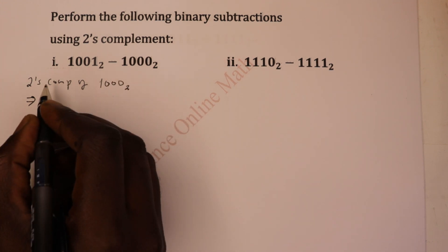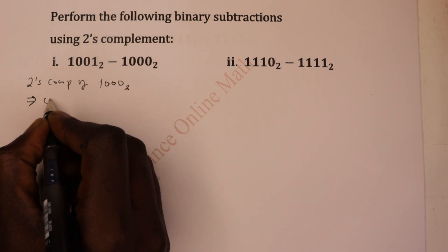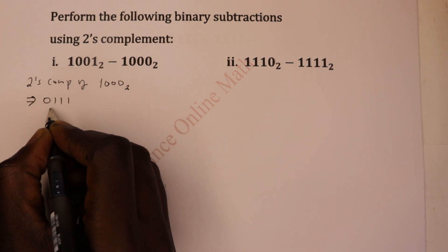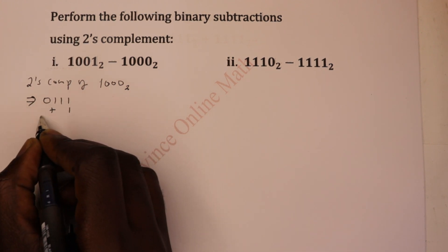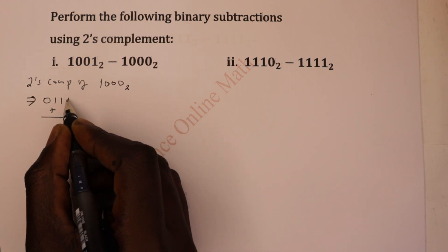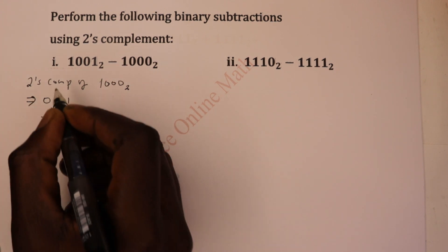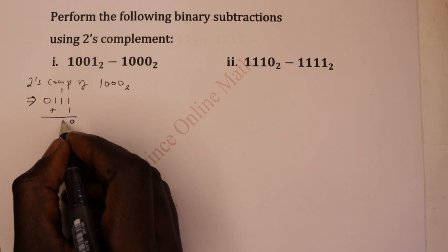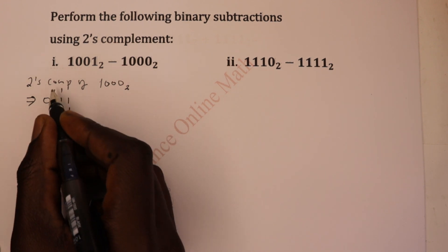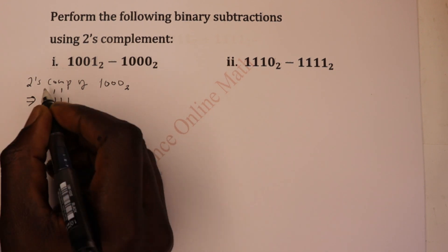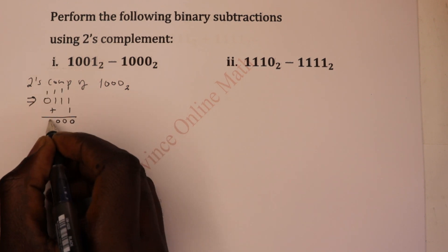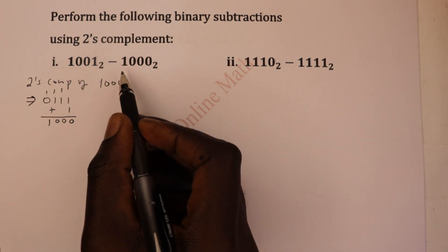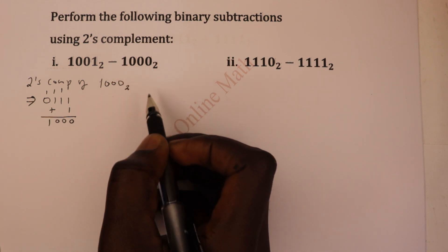So in this case, if you invert 1000, you're going to have 0, 1, 1, 1. Then you add 1 to that. So 1 plus 1 is 0 carry 1; 1 plus 1 is 0 carry 1; then 1 plus 1 is 0 carry 1; then 1 plus 0 is 1. So this is the two's complement of the subtrahend, the number you're subtracting.